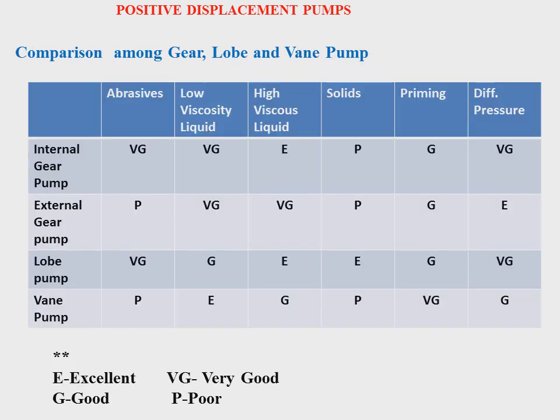Now, a comparison between gear pump, lobe pump, and vane pump. The nomenclature used is: E for excellent, G for good, VG for very good, and P for poor. The standard parameters compared are: abrasive application, low viscosity application, high viscosity application, solids content, priming property, and differential pressure. Regarding abrasive property, it is very good for the lobe pump and internal gear pump, and poor for external gear pump and vane pump.